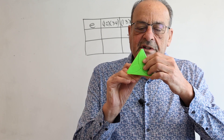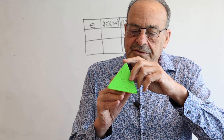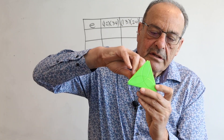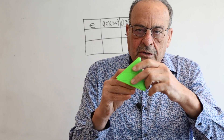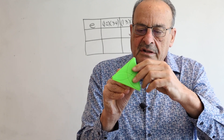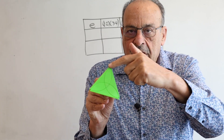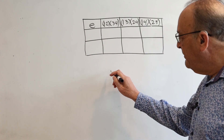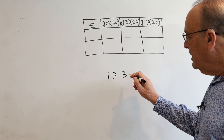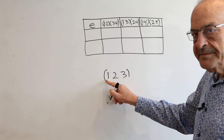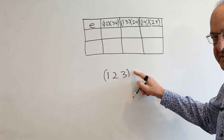Another way to get a symmetry with this is to just take one of the faces, like this green face, and you can rotate it 120 degrees either one way or the other way. When I do that, I fix one corner. So I have a little cycle where maybe this corner goes to this corner, and this corner goes to this corner, and this corner goes to this corner. So one corner is fixed.